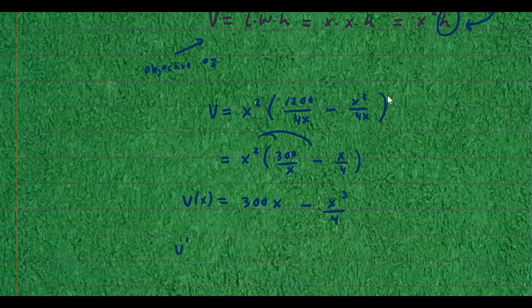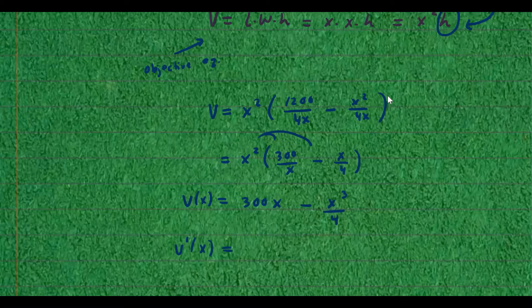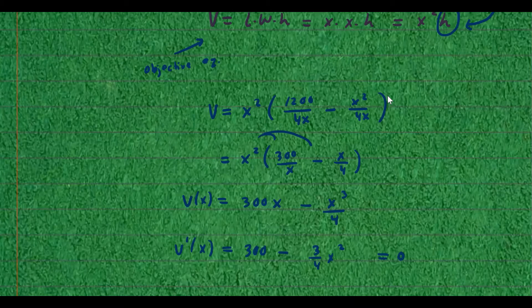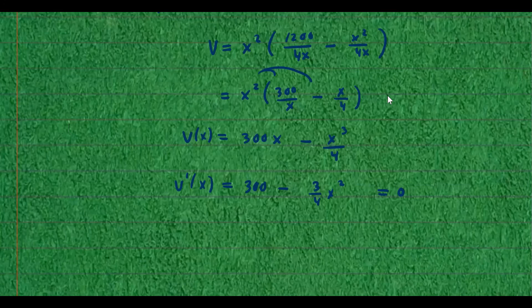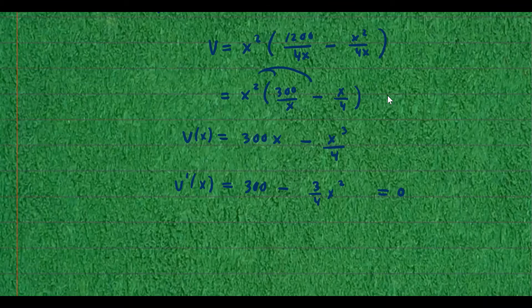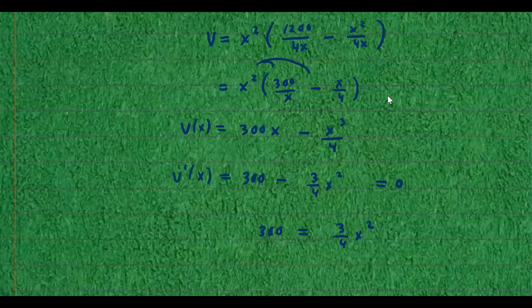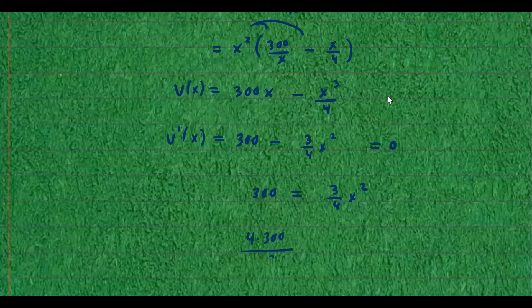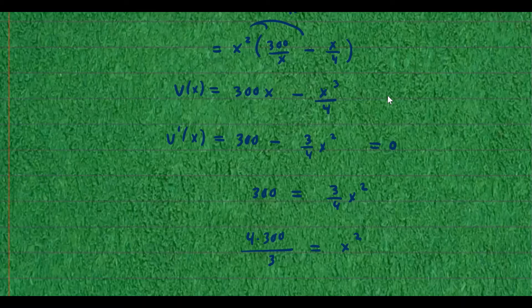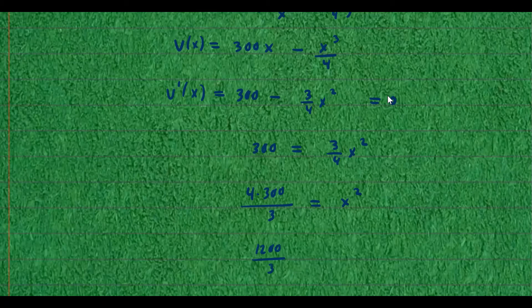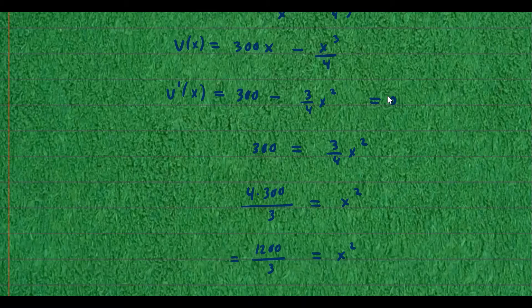Now let's take its derivative, v prime of x. So derivative of 300x is 300. And then derivative of x cubed is going to be 3 fourths x squared. And then we set it to zero to find its critical numbers. So if we set it to zero, we have moved the negative term to the right side. So you have 300 equals 3 fourths x squared. Then we can multiply both sides by 4 and then divide by 3. So that's 4 times 300 divided by 3 equals x squared. And that's going to give us 1,200 divided by 3.